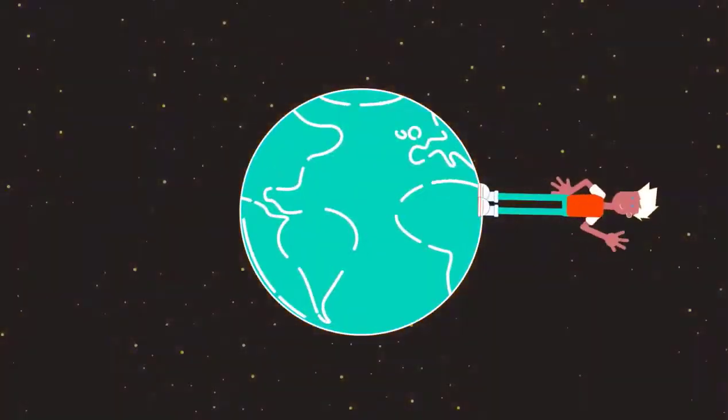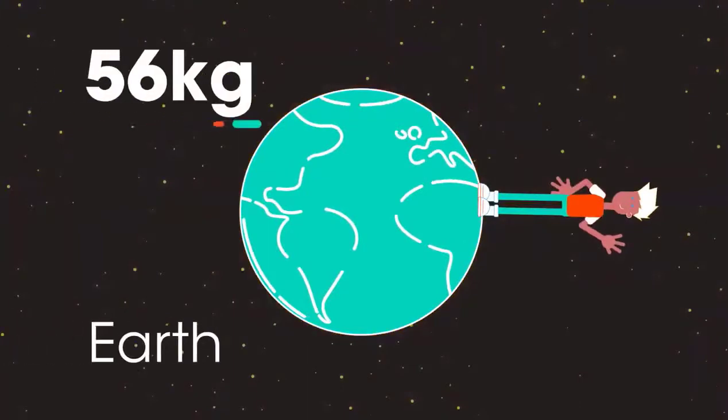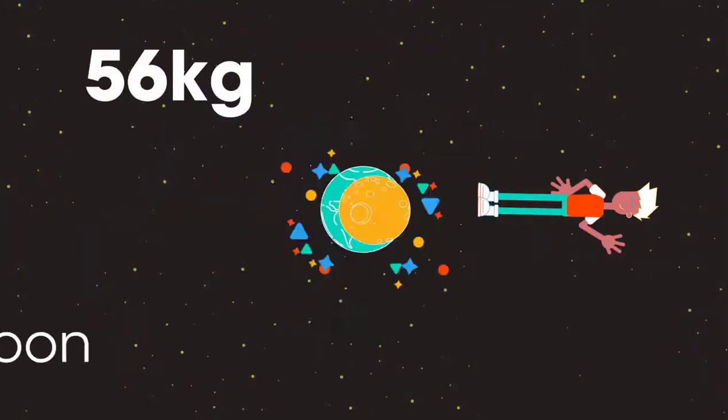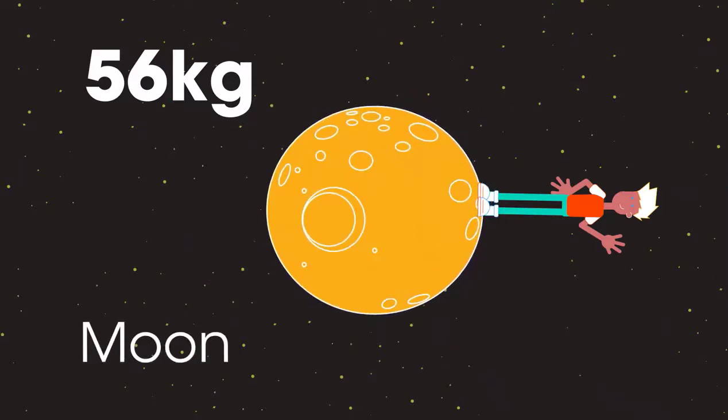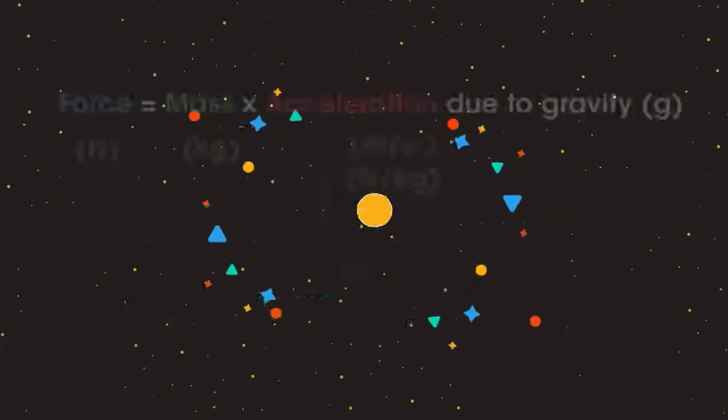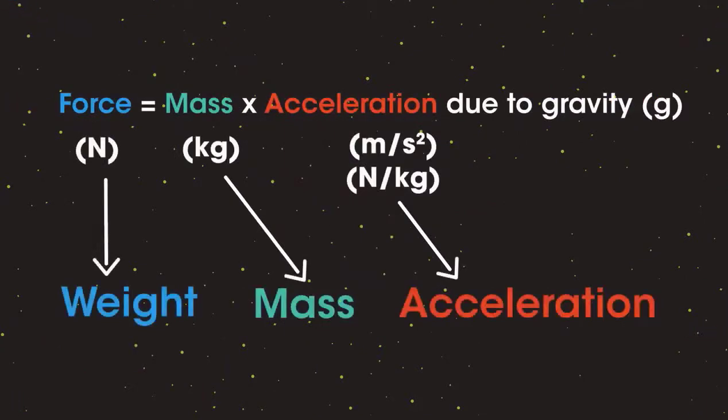For example, my mass on Earth is 56 kilograms. On the moon, I would still have a mass of 56 kilograms. The acceleration due to the Earth's gravity is measured in meters per second per second, or it can be measured in newtons per kilogram, as it's a force exerted on a unit mass.